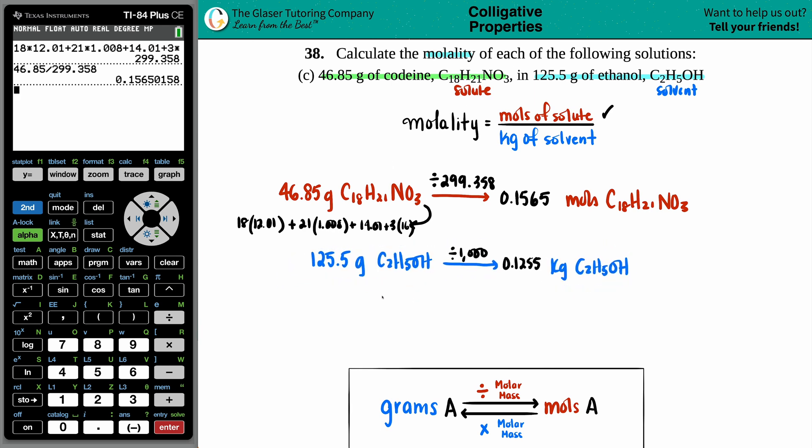And now we are ready for the formula. Molality, which by the way, is an italic lowercase m. Capital M is molarity with the R in it, but this is molality. So we got the 0.1565 on the top, we got the 0.1255 on the bottom. I'm just going to take this full number here for the numerator and divide it by 0.1255. And there we go.